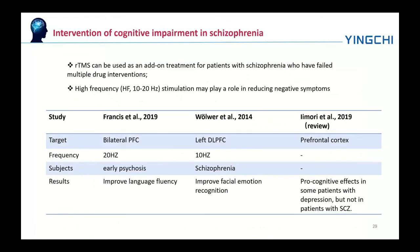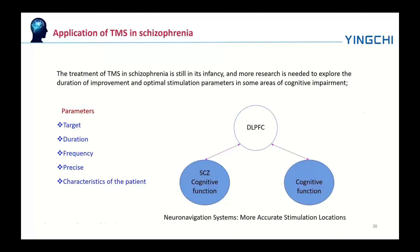rTMS can be used as an add-on treatment for patients with schizophrenia who have failed multiple drug interventions. High-frequency rTMS, especially 10 Hz to 20 Hz stimulation, may play a role in improving negative symptoms. The treatment of rTMS in schizophrenia is still in its infancy, and more research is needed to explore the duration of improvement and optimal stimulation parameters. More active stimulation locations also need to be explored.